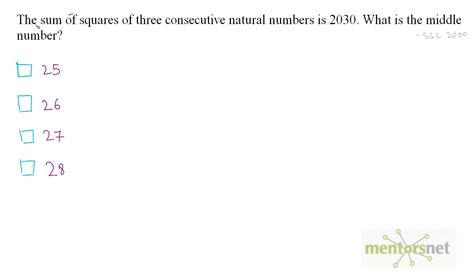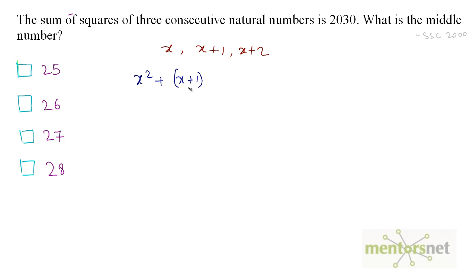Let us move on to the next question. The sum of squares of three consecutive natural numbers is 2030. What is the middle number? The three consecutive natural numbers can be written as x, x + 1, and x + 2. The sum of their squares gives us: x² + (x + 1)² + (x + 2)² = 2030.